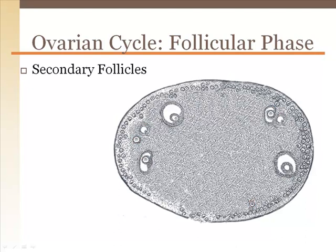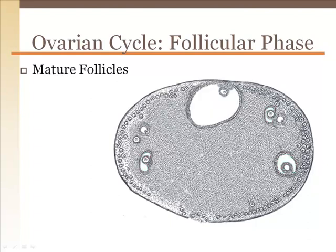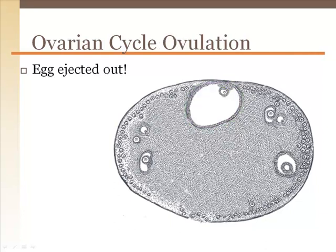As primary follicles enlarge, they become secondary follicles with the formation of a fluid-filled antrum. Secondary follicles become mature follicles as they enlarge further. Generally, only one of the secondary follicles becomes a mature or Graafian follicle. The mature follicle moves towards the perimeter of the ovary as the antrum continues to fill with fluid. The ovum or egg remains the same size as when it began, with the only development being in the surrounding follicle and some meiosis stages within. With the aid of a luteinizing hormone surge from the anterior pituitary gland, the ovum is propelled out of the ovary toward the uterine tube.